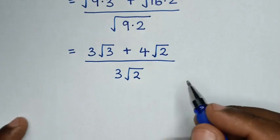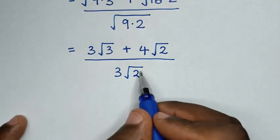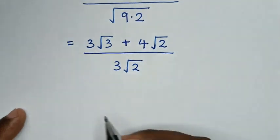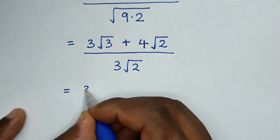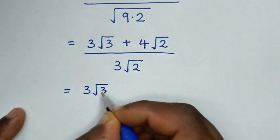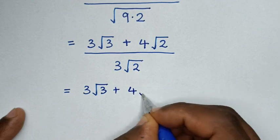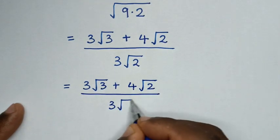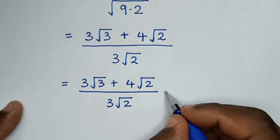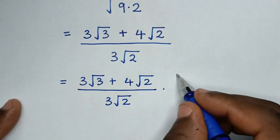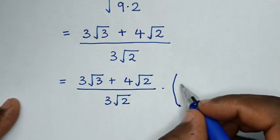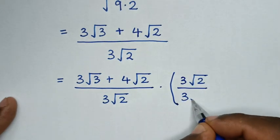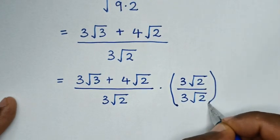Then in the next step, we will rationalize the denominator, so we will multiply by this denominator in the numerator and in the denominator. So it will be equal to 3 square root of 3 plus 4 square root of 2 over 3 square root of 2, multiplied by bracket 3 square root of 2 over 3 square root of 2 bracket.